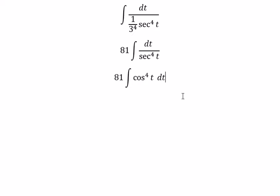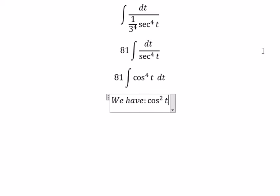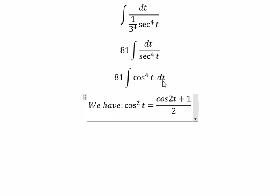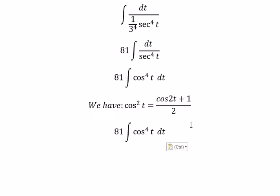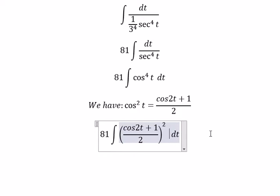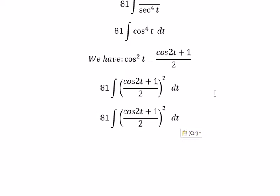We have cos(t) squared equal to cos(2t) plus 1 over 2. And for cos of t to the power of 4, so in this situation you will go about like this. We have 2 to the power of 4, so we have number 2 to the power of 2.